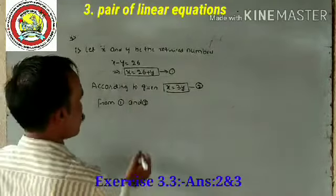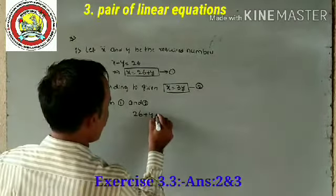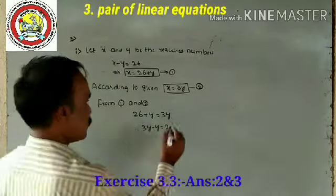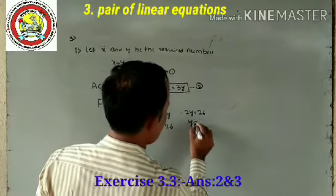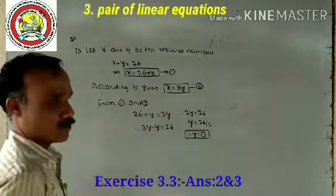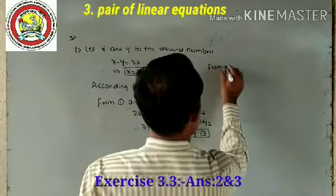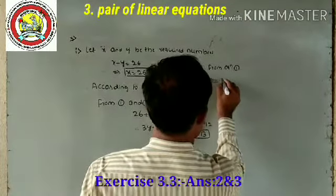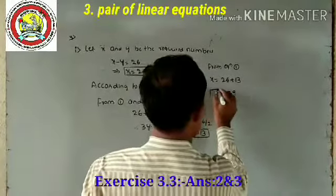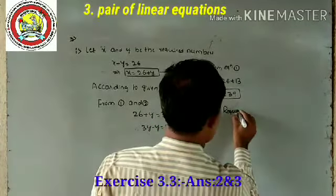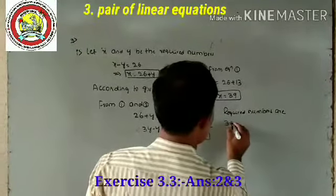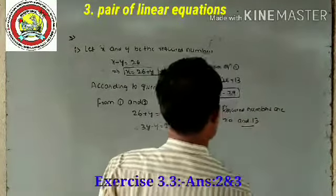From equations 1 and 2: 26 + y = 3y, so 3y - y = 26, giving 2y = 26, y = 26/2 = 13. From equation 1: x = 26 + 13 = 39. Therefore the required numbers are 39 and 13.